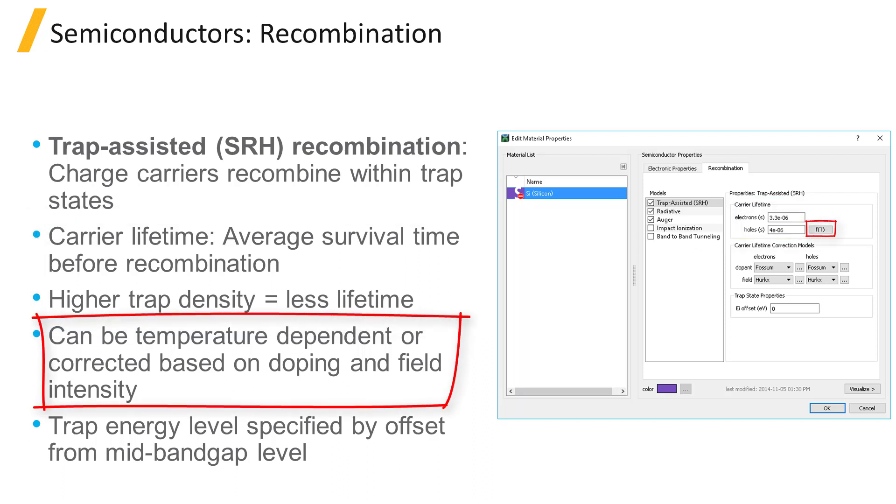Moreover, Device provides a temperature-dependent model for the SRH carrier lifetime, as well as models that include corrections for doping density and field effects. The trap energy level can be specified in the model by its offset from the material's mid-band gap energy level.